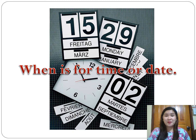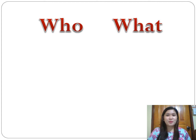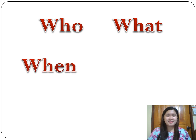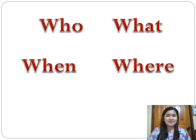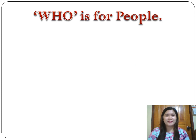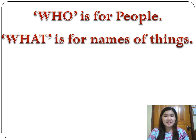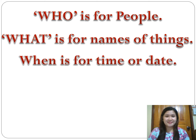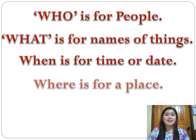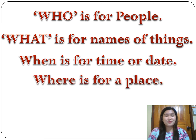Alright, so let's have a quick review of what we discussed today. We have: who, what, when, and where. Who is for people. What is for names of things. When is for time or date. And where is for place.